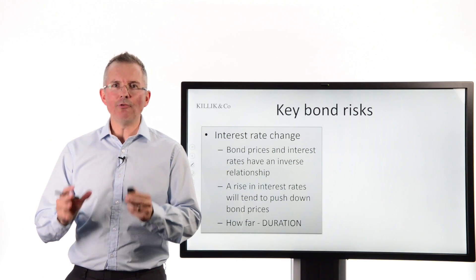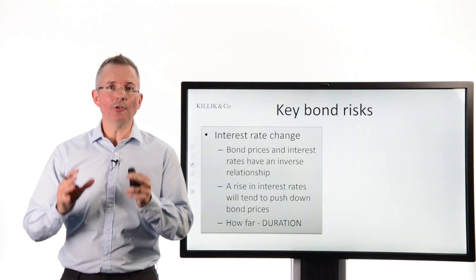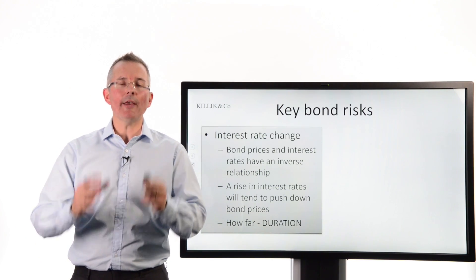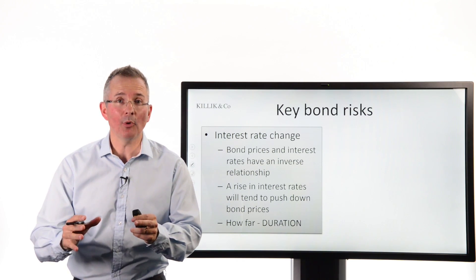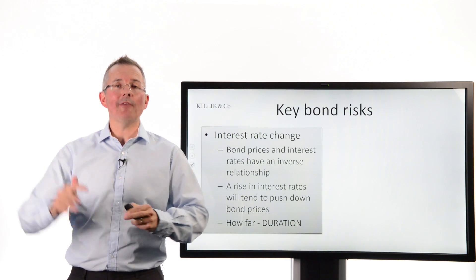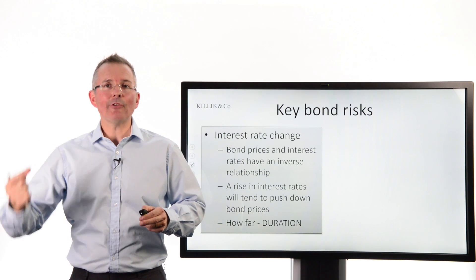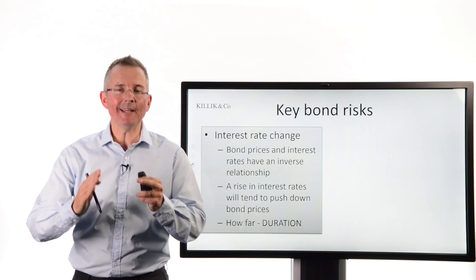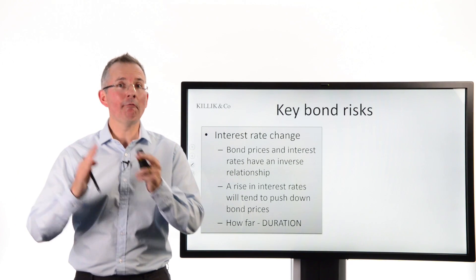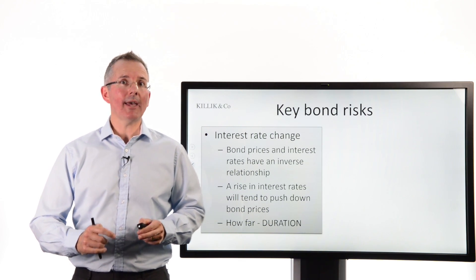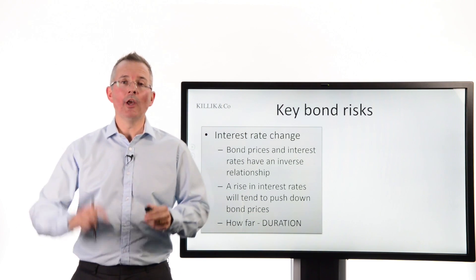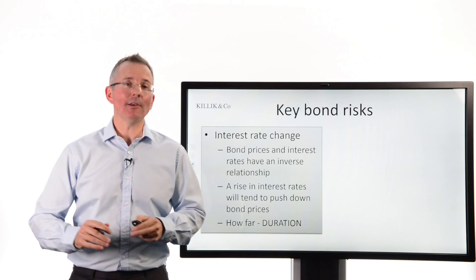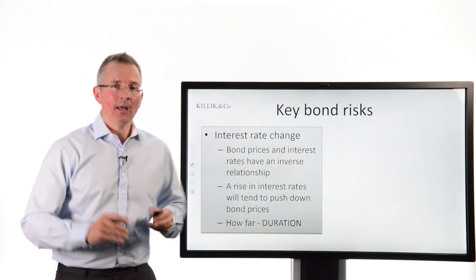What are the main risks when you hold a bond? Duration deals with one of them. If you hold a bond, interest rate changes — particularly if interest rates rise and you're holding a fixed income bond — can be a problem. If you're holding a bond with a fixed coupon, as interest rates rise, the value of your coupon relative to returns you could get elsewhere falls. That tends to push down bond prices so your overall yield is maintained. So an interest rate rise tends to be bad news for bond prices. The question is: how bad? And that's where duration comes in.